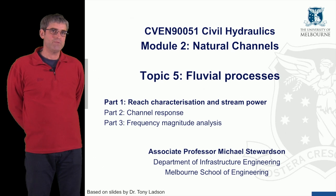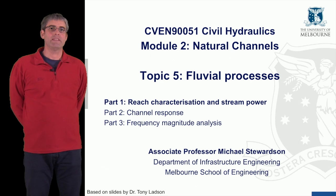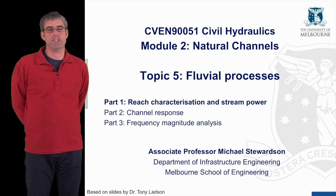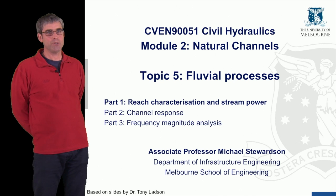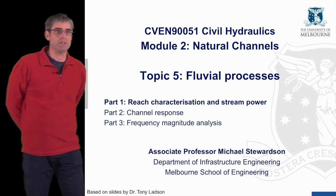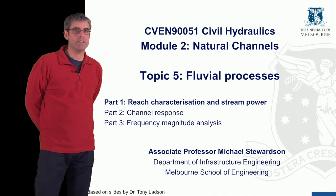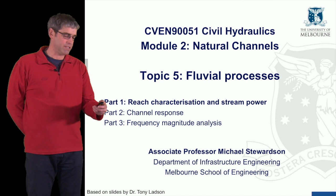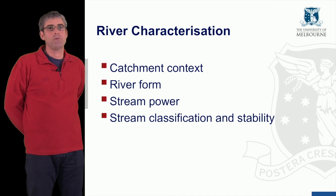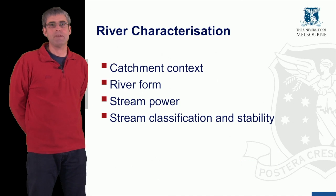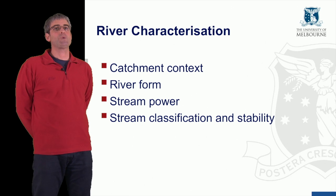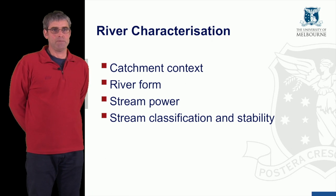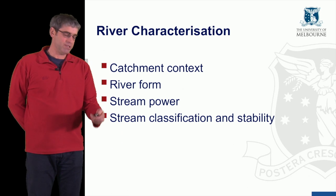Welcome to the first video in Topic 5 for the Natural Channels module. Topic 5 is about fluvial processes, and in this first video we're going to talk about reach characterization and stream power. We'll start off by talking about catchment context, then river form, stream power, and stream classification and stability.